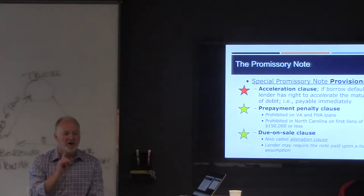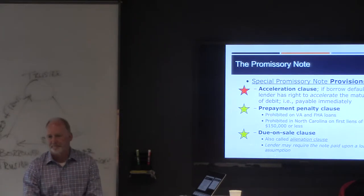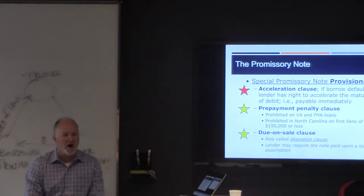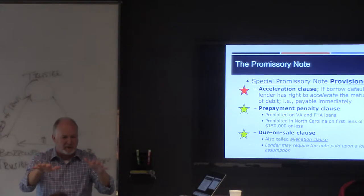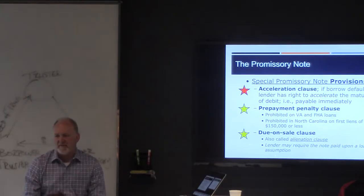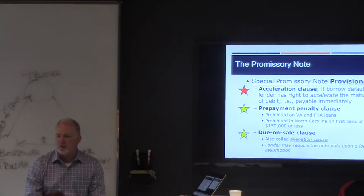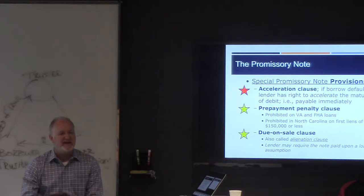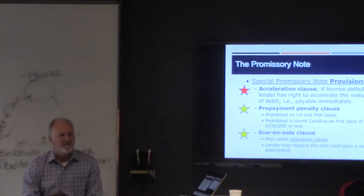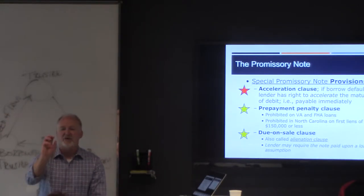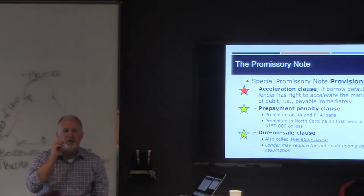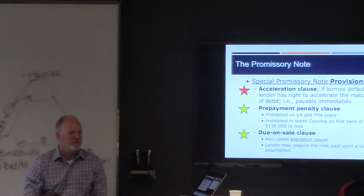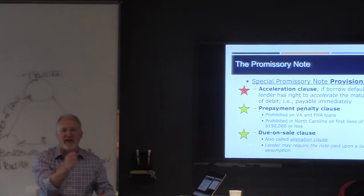A due on sale clause makes a note unassumable. Now, in your generation of people getting interested in real estate, you might not be familiar with a loan assumption because they're extraordinarily rare today. But having said that, in the past, it was not uncommon for me to buy your house this way: I pay you for your equity, and then I just simply take over your loan. In other words, you owe $80,000 on the house, you're selling me the house for $100,000. Why can't I just give you $20,000 cash and take over your loan?